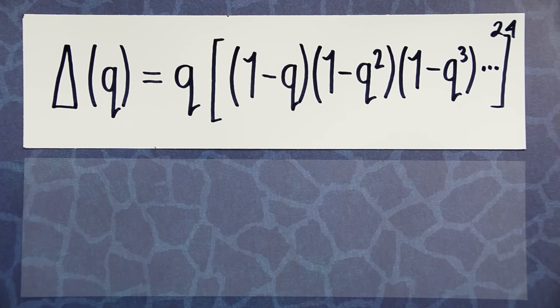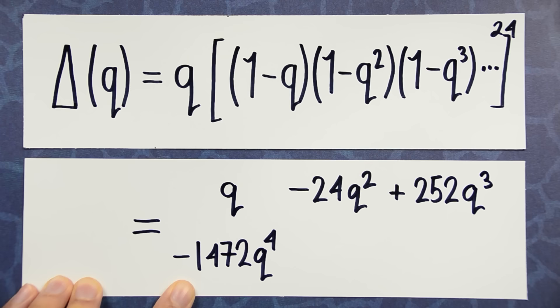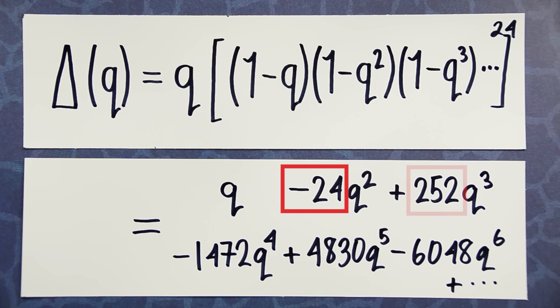For no particular reason, he decided to multiply it out. And when he did, he got this strange sequence of numbers. While most people wouldn't have looked twice at this list, Ramanujan noticed something very strange. If you took this number and multiplied it by this number, it equaled this number.